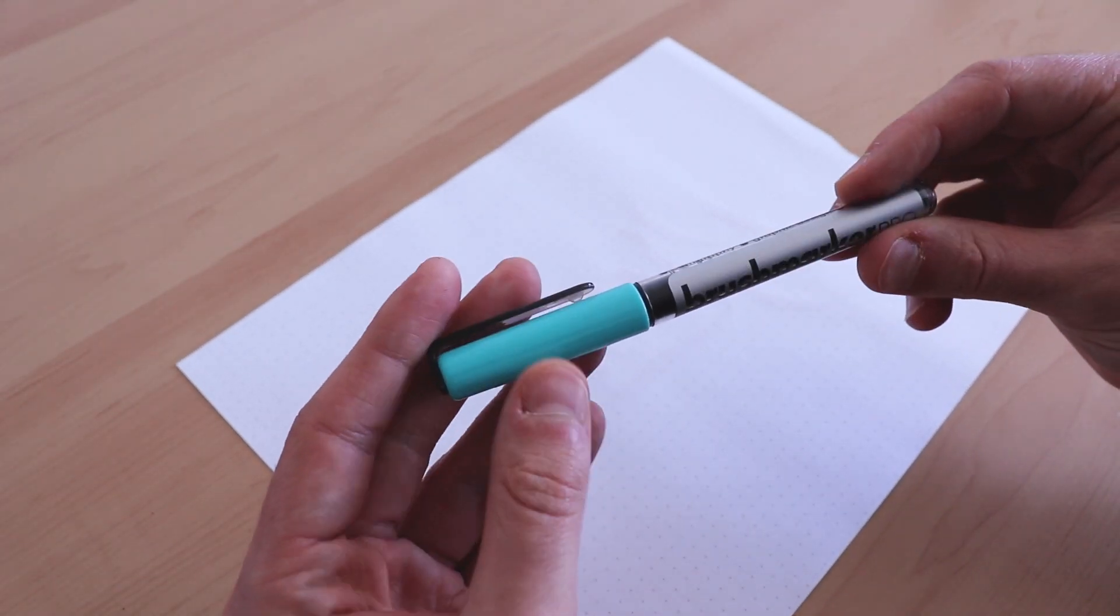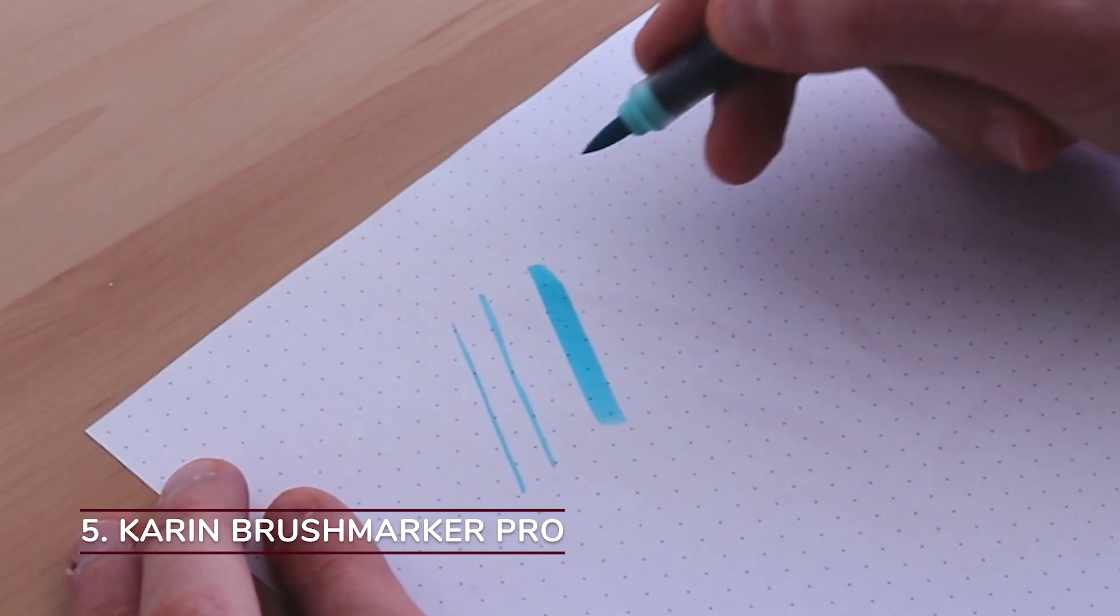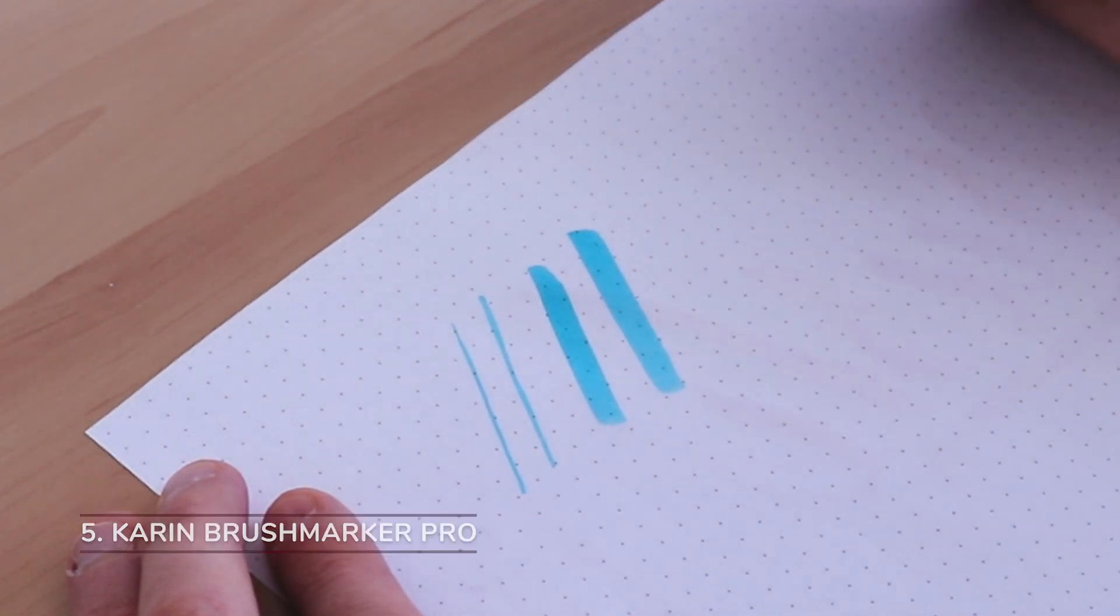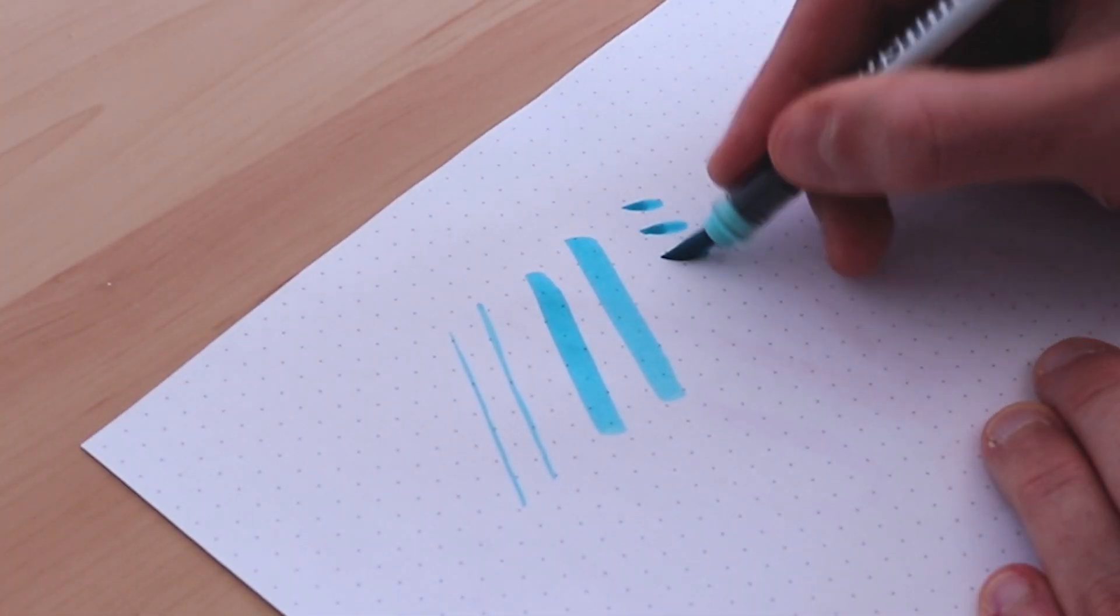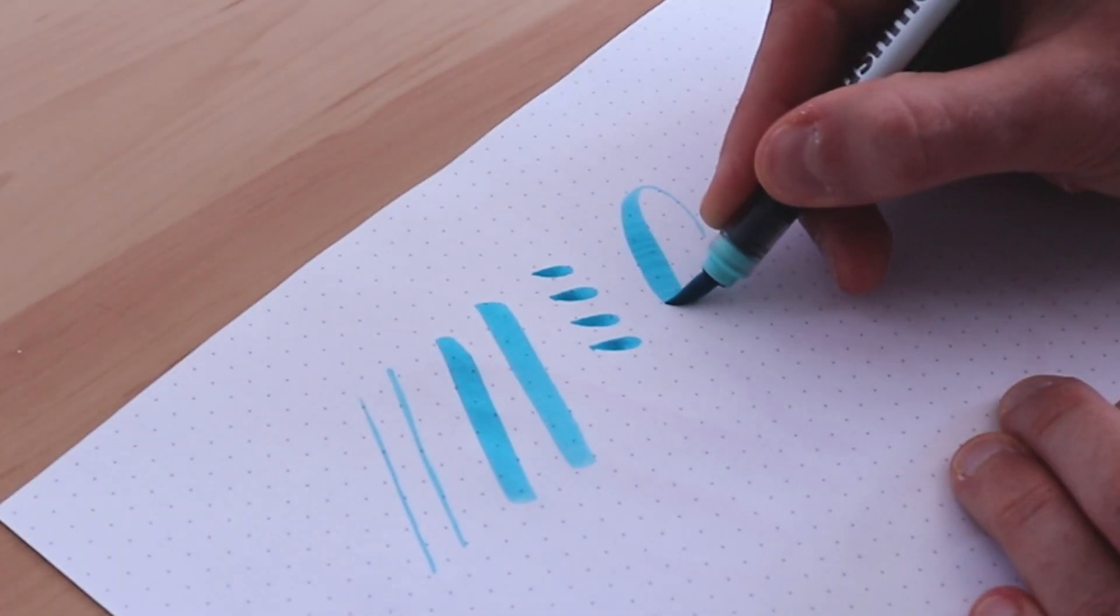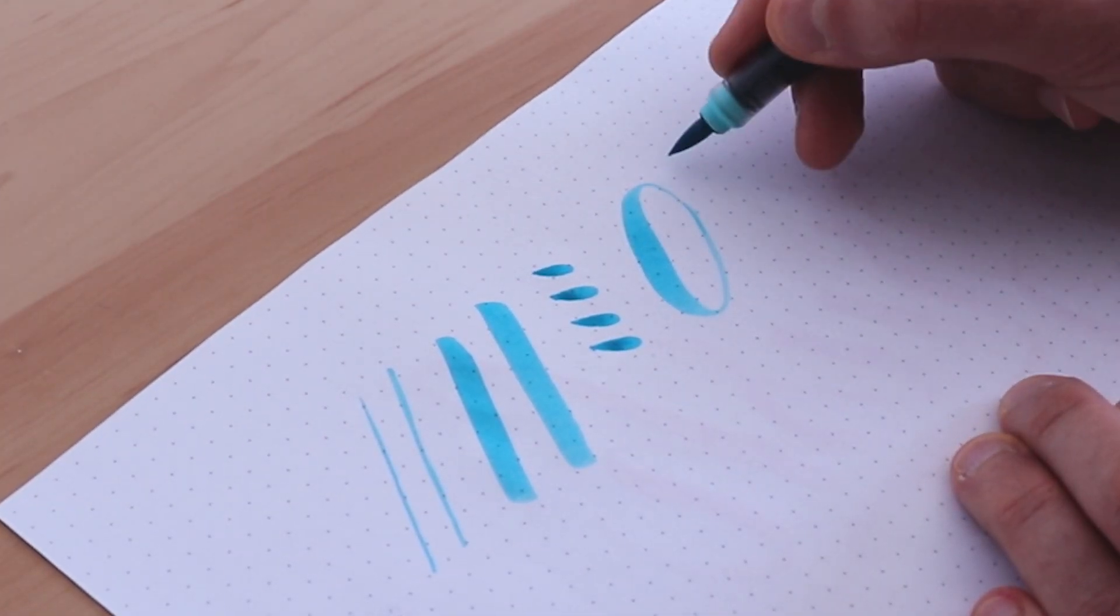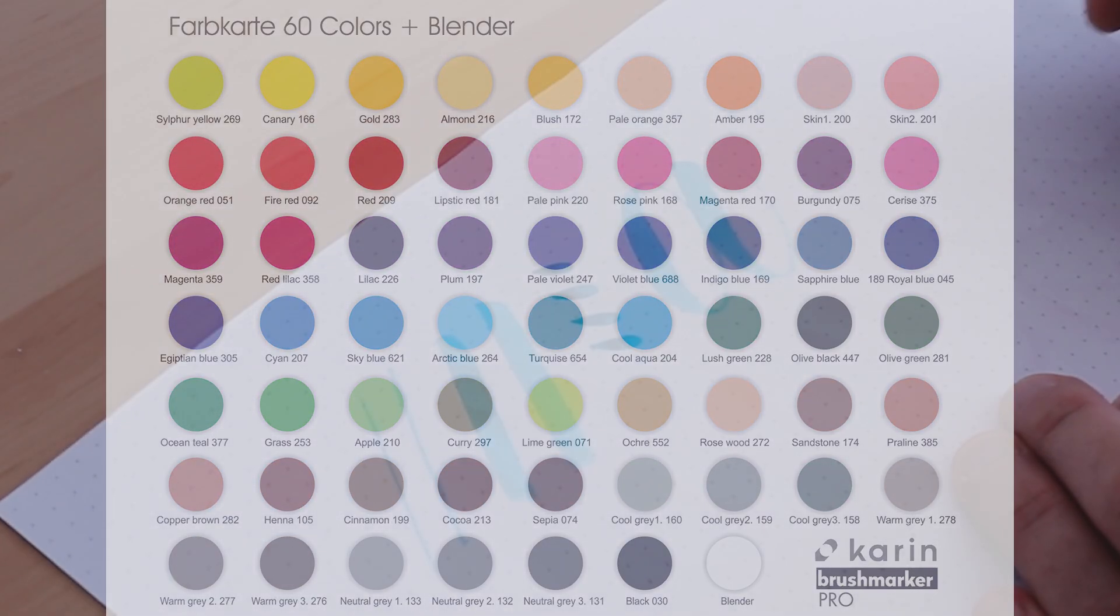Number five on our list is the Karin Brushmarker. The size of the nib is large, medium large, the nib elasticity is medium and leaning towards soft, the ink flow is extremely wet and it comes in 60 vibrant and beautiful colors.